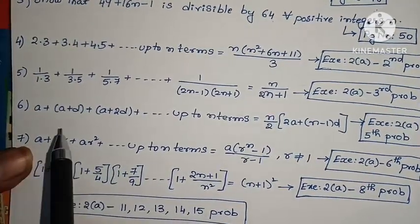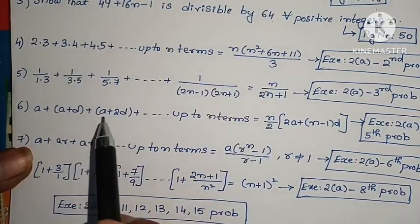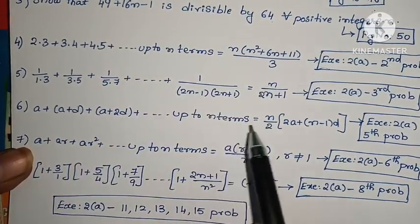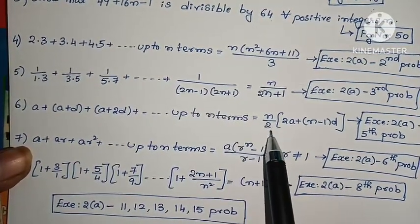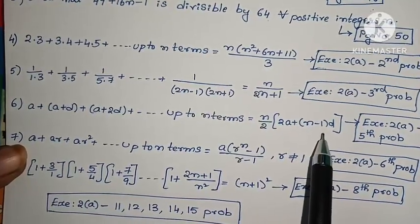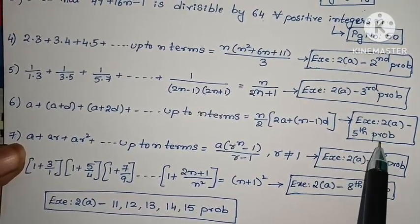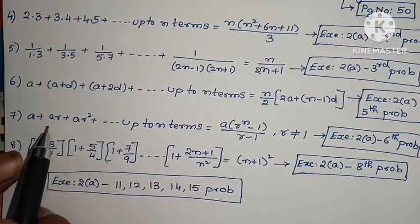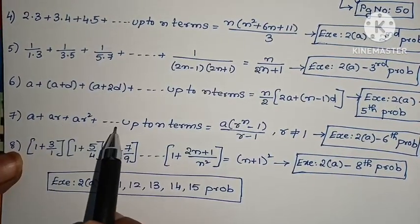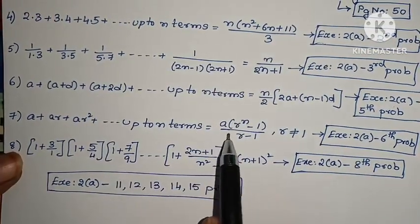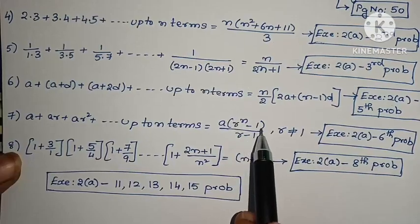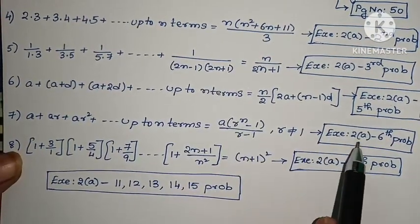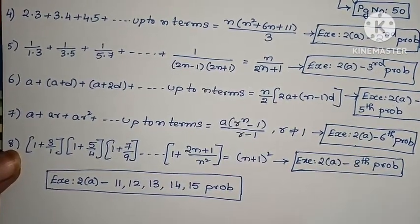Sixth problem: a plus (a plus d) plus (a plus 2d) plus and so on up to n terms equals n by 2 into (2a plus (n minus 1) into d). Seventh problem: a plus a·r plus a·r squared plus and so on up to n terms equals a into (r to the power n minus 1) by (r minus 1).